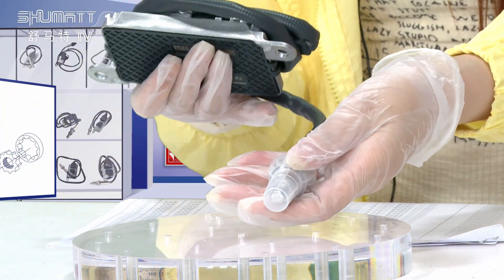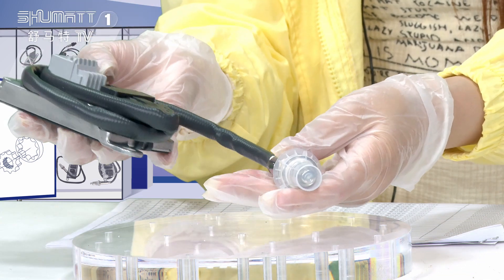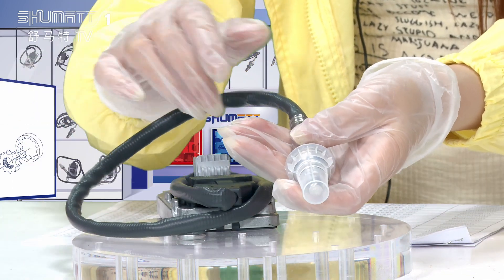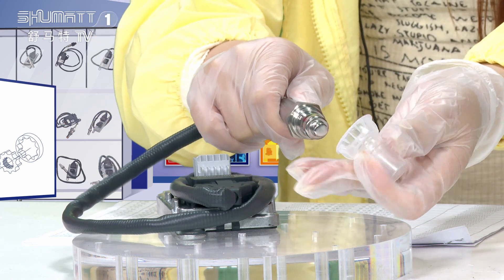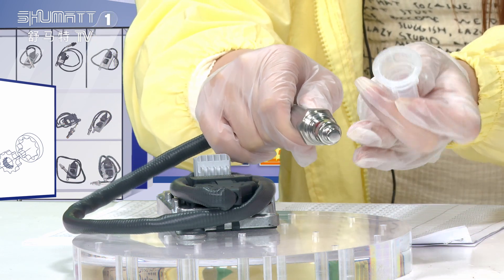Firstly, let's see this part. This one is the sensor probe. We use protection covers to protect this position.